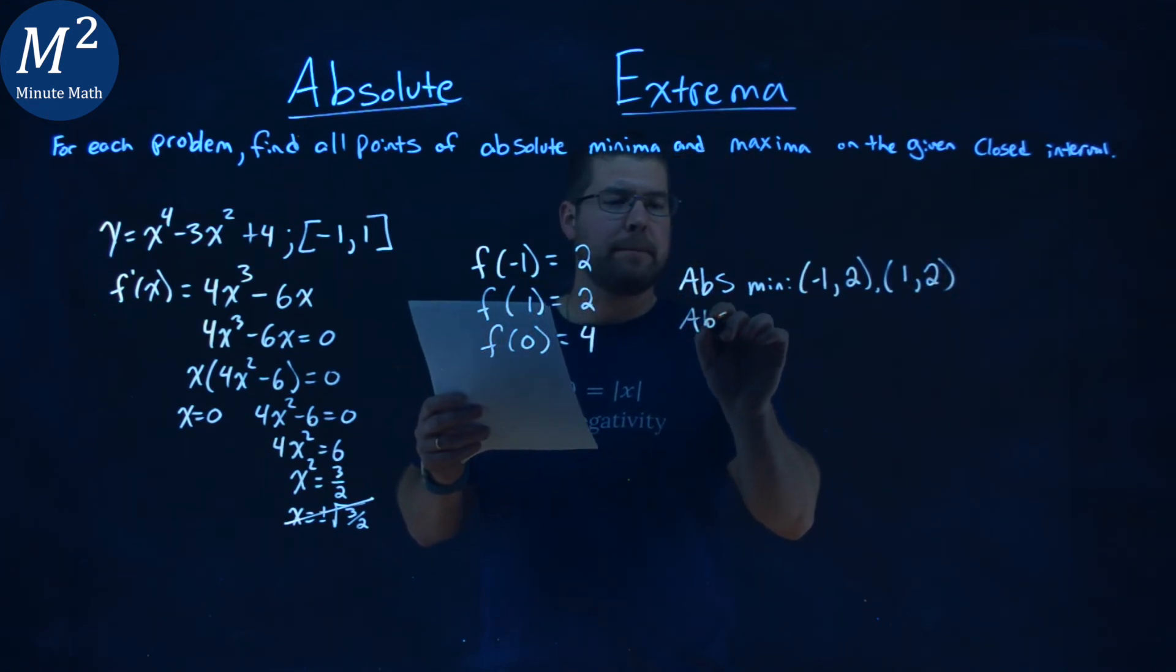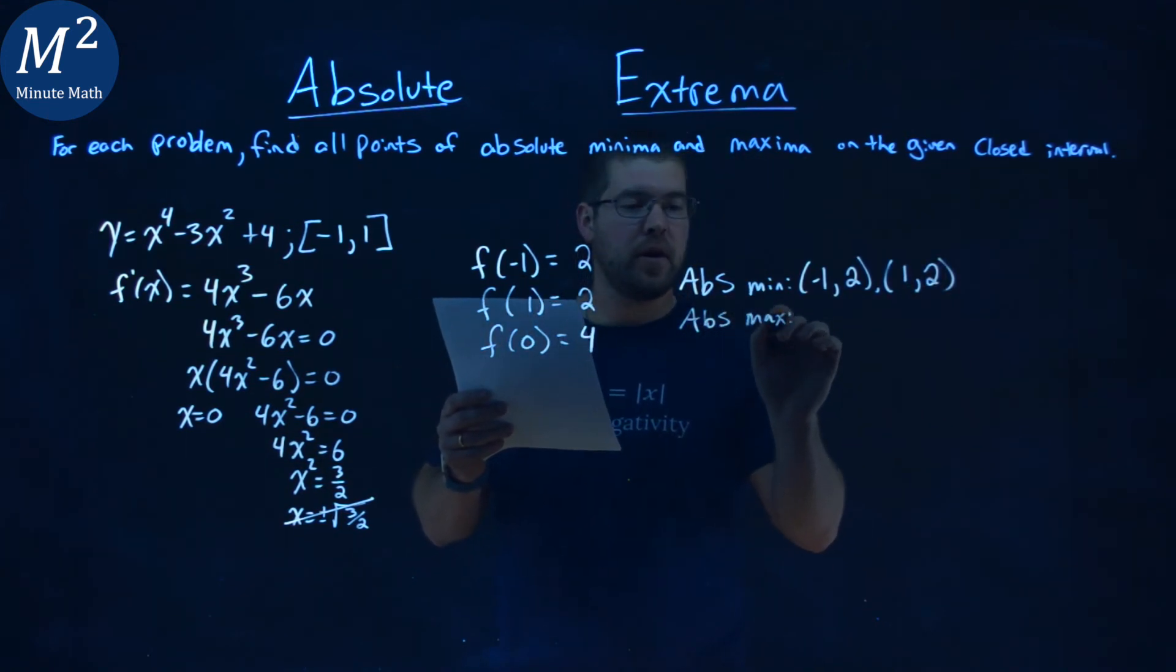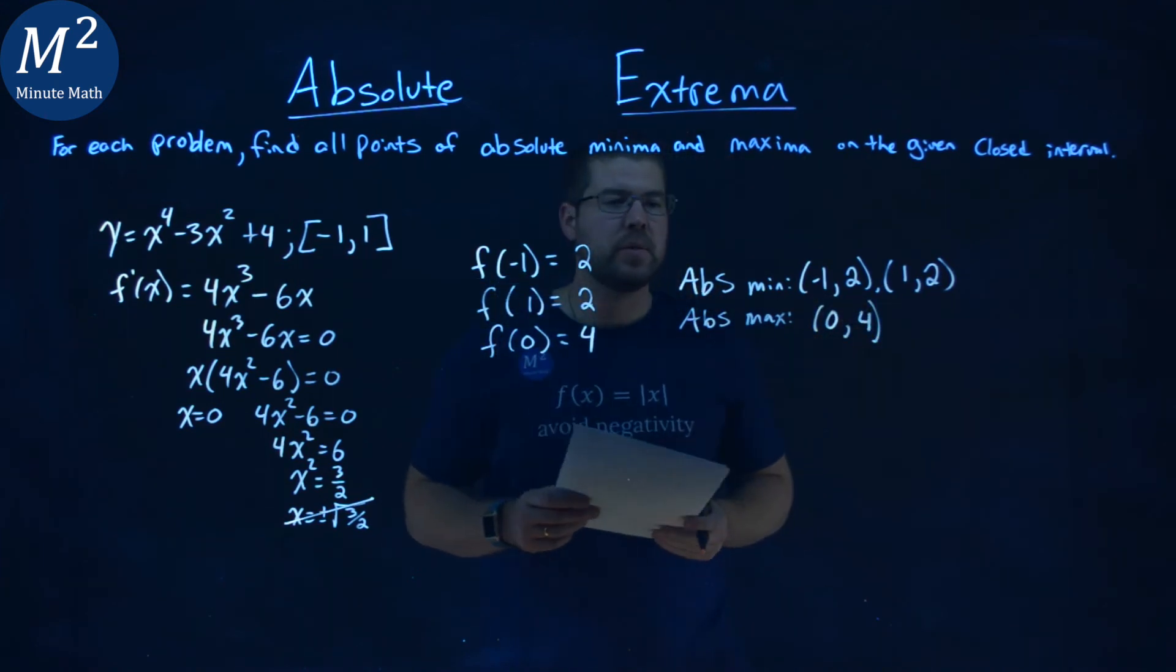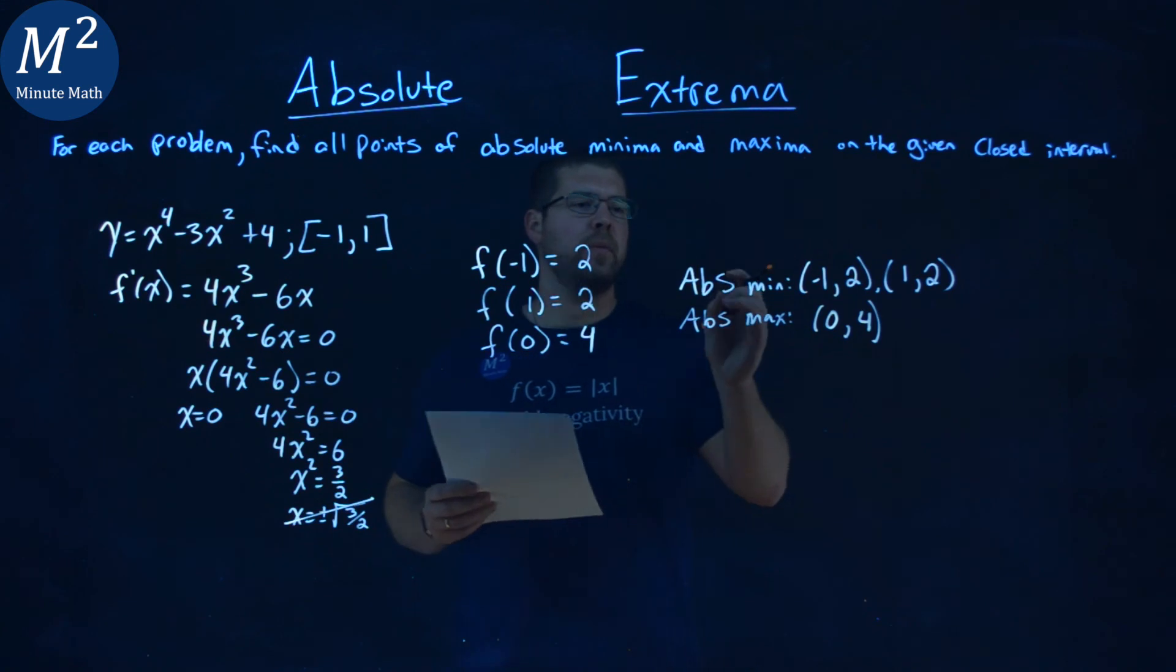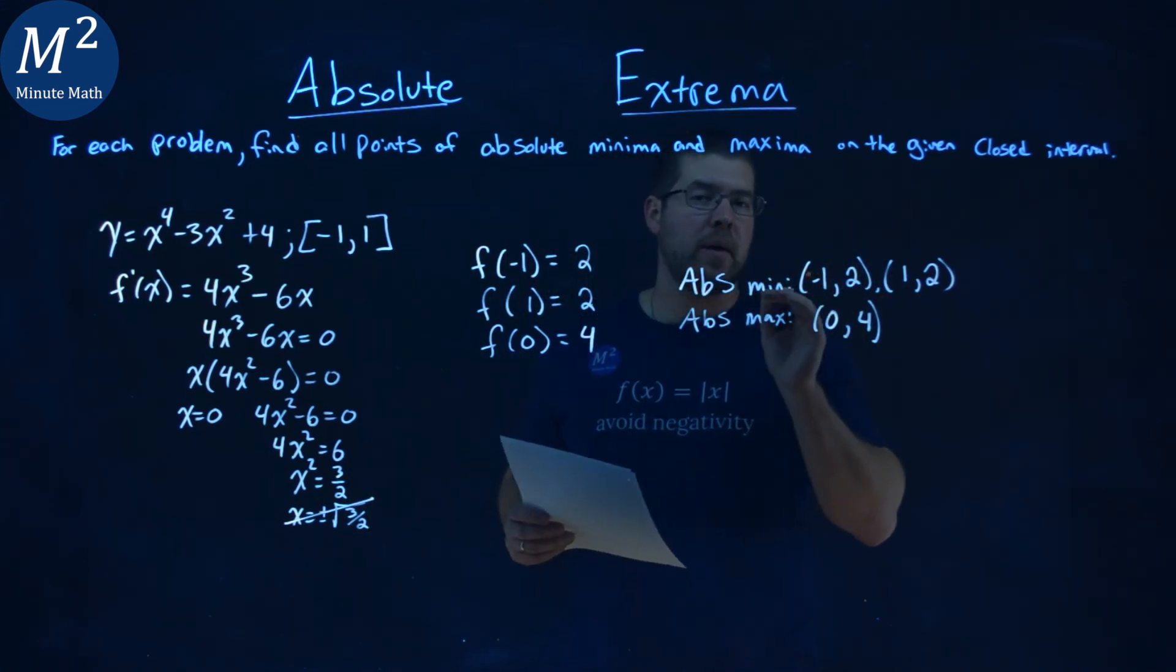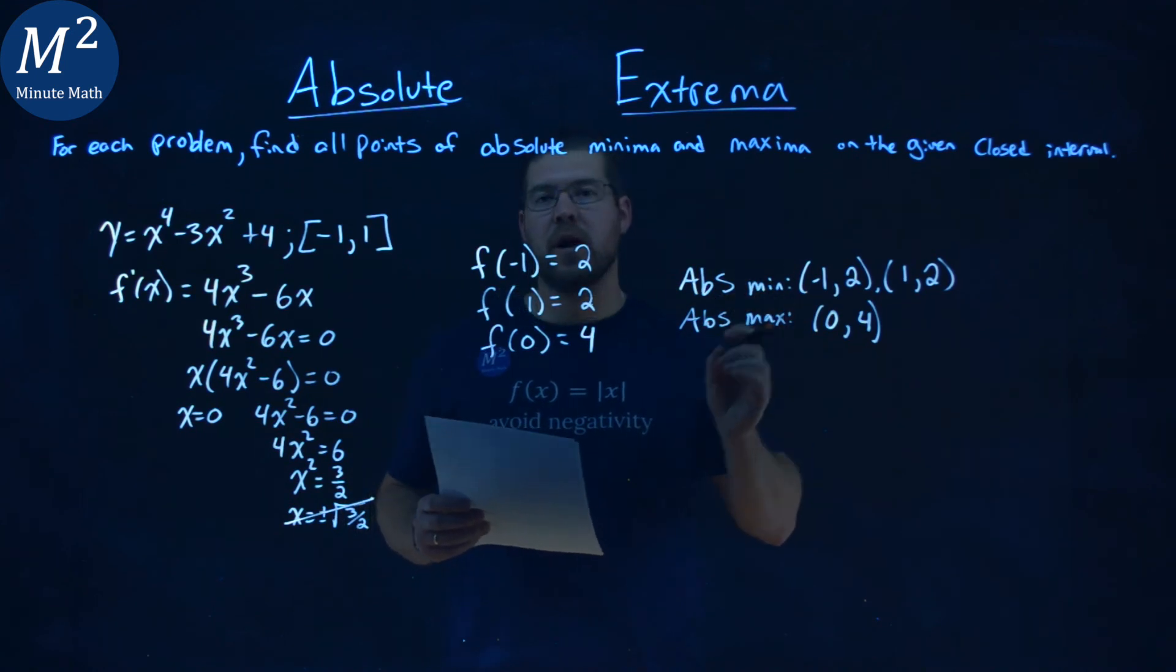Our absolute maxima on our interval is 0 comma 4. So again, our final answer here is the absolute minimum at negative 1 comma 2 and positive 1 comma 2, and our absolute maxima happens at 0 comma 4.